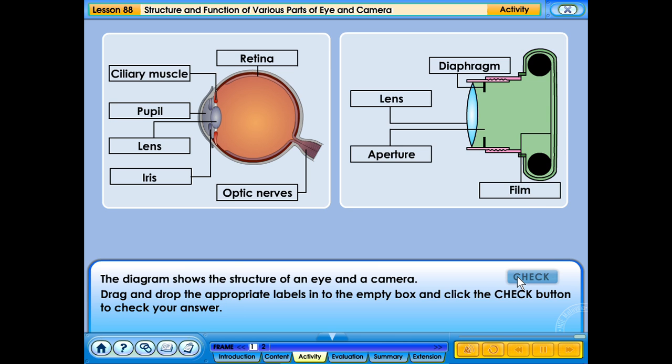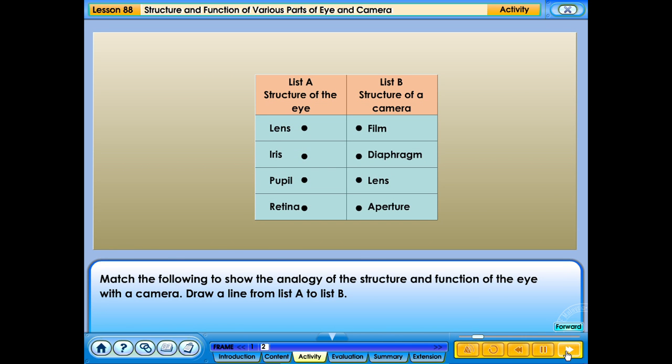Your answer is correct. Match the following to show the analogy of the structure and function of the eye with the camera. Draw a line from list A to list B.